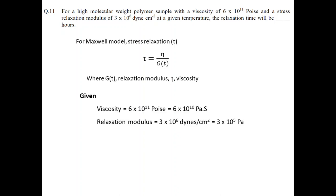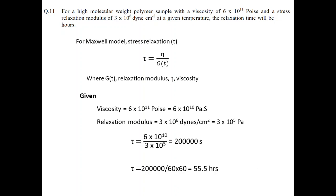We can convert the viscosity and modulus values into similar units — Pascal·second and Pascal — by dividing poise and dynes per centimeter squared by 10. Putting them into the equation and simplifying, we find that the relaxation time is 55.5 hours.